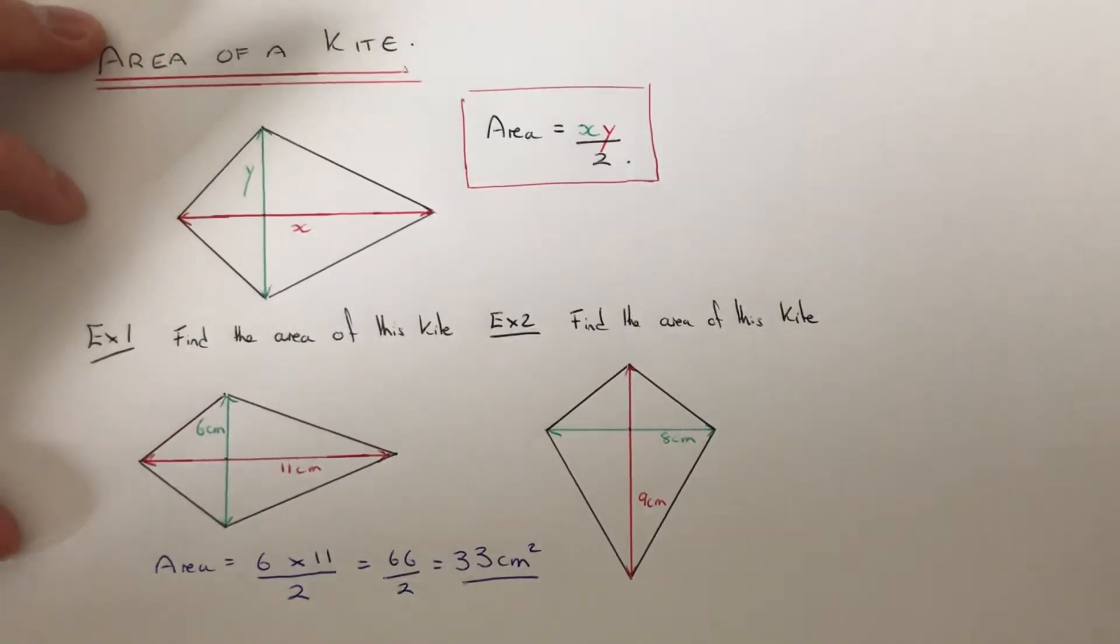Let's move on to example 2. This time my kite has diagonals of 8cm and 9cm.